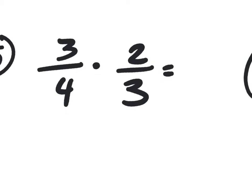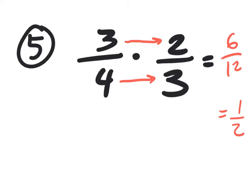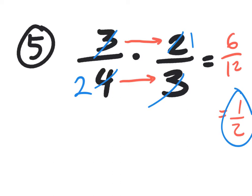Multiplying fractions is the easiest thing in the world. Number 5: you have two options. You could multiply top with top and bottom with bottom to get 6 over 12, which reduces to 1/2. Or, for a quicker route: if you see a 3 on top and a 3 on the bottom, they divide out — scratch them out. The 2 and the 4 reduce by 2, giving you 1 and 2. Either way you get 1/2 — it's your choice whether to cancel first or multiply then reduce.